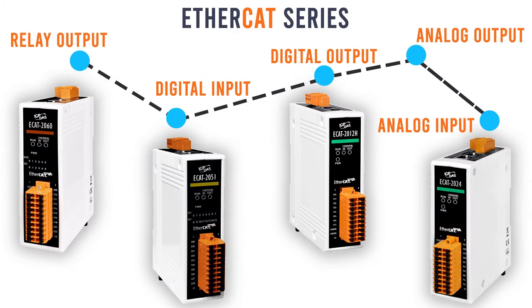The development goal of EtherCAT is to apply Ethernet to automation applications which require short data update times — also called cycle times — with low communication jitter and hardware costs.